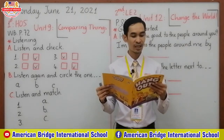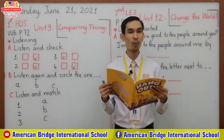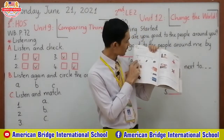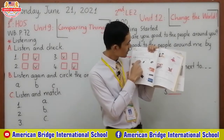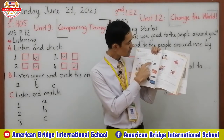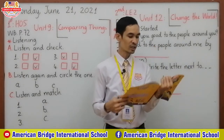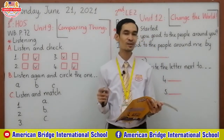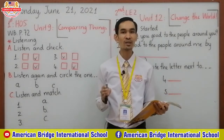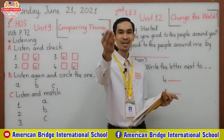B: Listen again and circle the one the boy wants to buy. Here you see option A — an orange mouse, B — a black mouse, and C — a Bluetooth mouse. So now I would like you to listen to the track again and then circle what the boy wants to buy. Now listen.